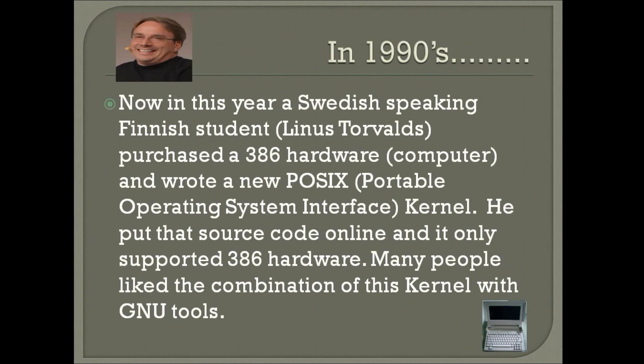In the 1990s, a Finnish student named Linus Torvalds, working on 386 hardware (a PC), created a POSIX-compatible kernel — which means Linux is a kernel. He put its source code online. The kernel only supported 386 hardware initially, but many people liked the combination of GNU tools together with this kernel, and great things followed.